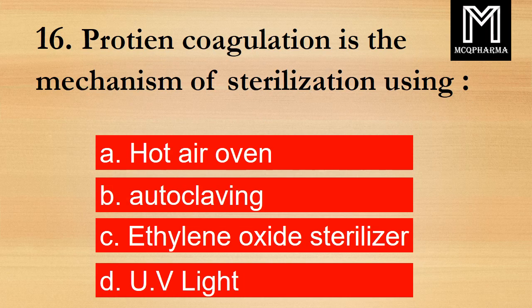Question number 16. Protein coagulation is the mechanism of sterilization using? Option A: Hot air oven. B: Autoclaving. C: Ethylene oxide sterilizer. D: UV light. Correct answer: Option B, Autoclaving.